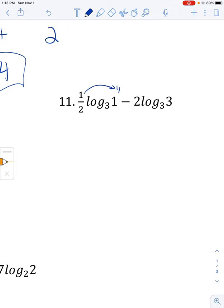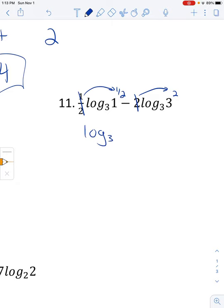All right. Let's bring that half power up there and let's bring that second power up there. So we have log base 3 of 1 to the 1 half is still 1, it turns out. And then we have log base 3 of 3 squared is 9. So I can combine these, I suppose. I'll use a variety of ways of solving. 1 over 9, if I divide the two arguments, is what I get. And 3 to the power of what is 1 over 9? 3 to the power of negative 2.